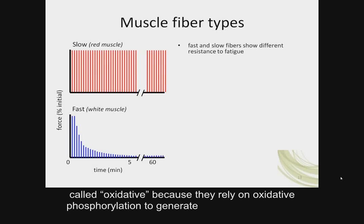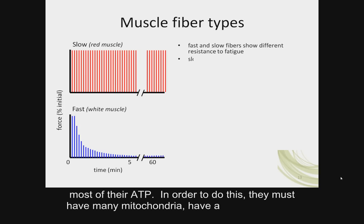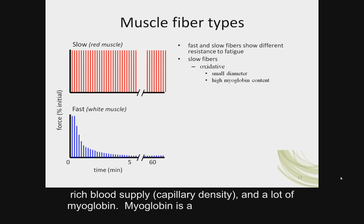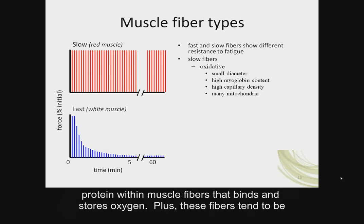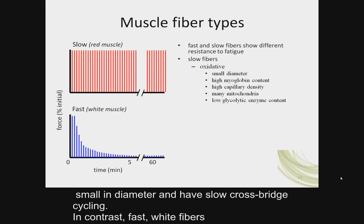Slow red fibers are also called oxidative because they rely on oxidative phosphorylation to generate most of their ATP. In order to do this, they must have many mitochondria, a rich blood supply with high capillary density, and a lot of myoglobin. Myoglobin is a protein within muscle fibers that binds and stores oxygen. These fibers also tend to be small in diameter and have slow cross-bridge cycling.